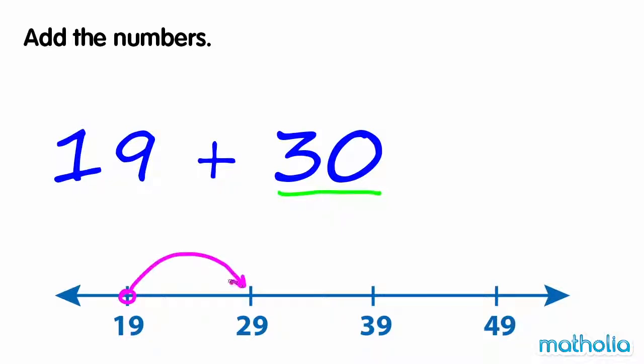19, 29, 39, 49. So 19 plus 30 equals 49.